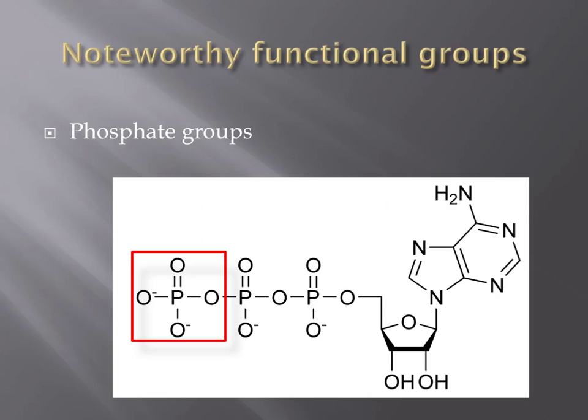Phosphate groups consist of a phosphorus atom bonded to four oxygen atoms. Three phosphate groups are shown here in the important in-cell energy molecule, ATP. Phosphate groups are also found in nucleic acids, which we will discuss later.